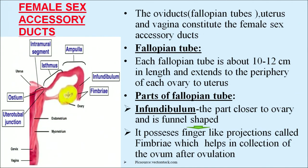The oviduct, uterus, and vagina constitute the female sex accessory ducts. The fallopian tube, also called the oviduct, carries the ovum. Each fallopian tube is about 10 to 12 centimeters in length and extends from the periphery of each ovary to the uterus. The fallopian tube has three parts: the infundibulum, the ampulla, and the isthmus.